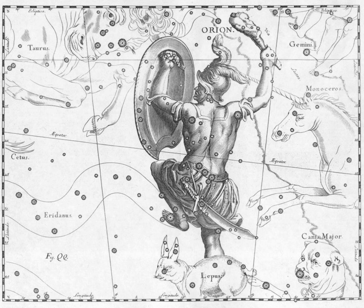These references appear in Job 9:9 and 38:31–32. However, Ash (the Bear) actually corresponds to Ursa Major. The term Mazzaroth, translated as 'a garland of crowns,' is a hapax legomenon in Job 38:32, and it might refer to the zodiacal constellations.